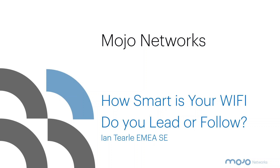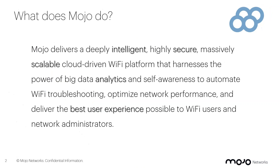Good morning. Today's presentation is about Mojo Networks — we used to be Airtight, so we come from a very strong security background. Mojo delivers probably the most scalable solution on the planet for Wi-Fi networks. Our largest customer has 120,000 access points on a single instance across the subcontinent of India, doing one terabyte of data a day with a million users. Our nearest competitor on that scale can only do 30,000 on a single instance.